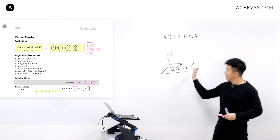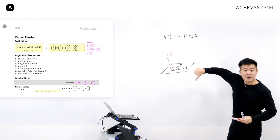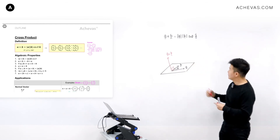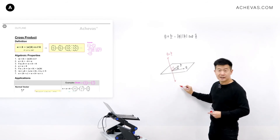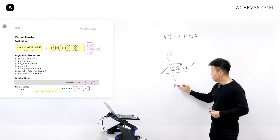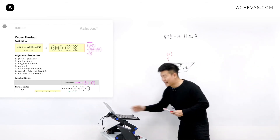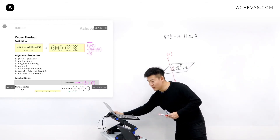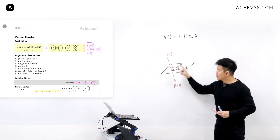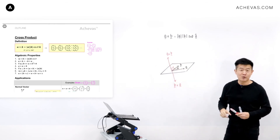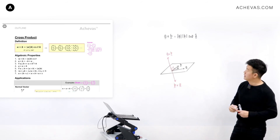To determine whether A cross B points upward or downward, we use the right-hand screw rule: place the edge of your palm on the first vector A, swipe towards vector B, and your thumb represents the direction of A cross B. In this case, A cross B points upward, which means B cross A points downward. This explains property 2: A cross B equals negative of B cross A.